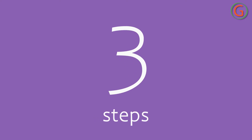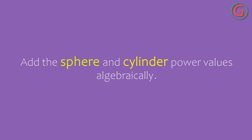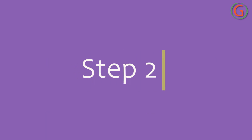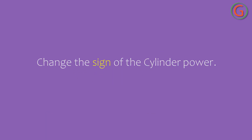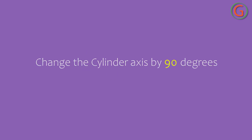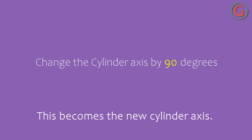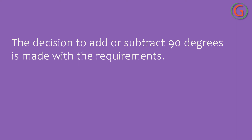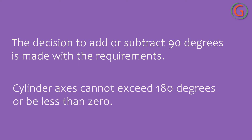In most cases, three steps are used. Step 1: Add the sphere and cylinder power values algebraically — this becomes the new sphere power. Step 2: Change the sign of the cylinder power — this becomes the new cylinder power. Step 3: Change the cylinder axis by 90 degrees — this becomes the new cylinder axis. The decision to add or subtract 90 degrees is made with the requirement that the cylinder axis cannot exceed 180 degrees or be less than zero.